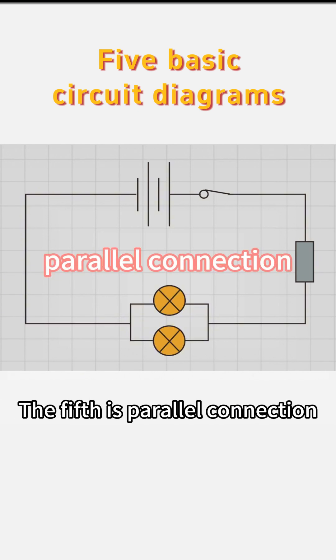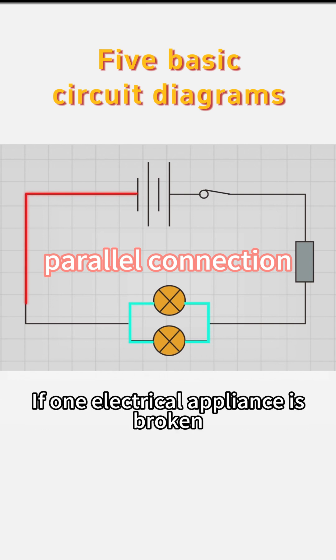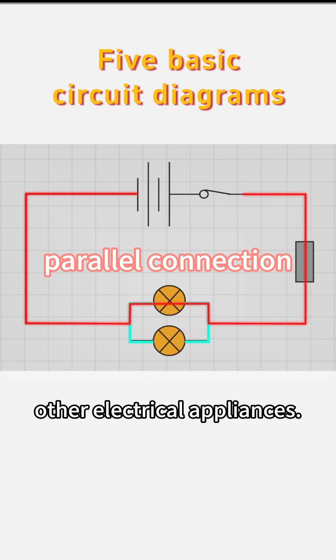The fifth is parallel connection, which means that multiple components are connected hand-to-hand and tail-to-tail on a power supply. If one electrical appliance is broken, it will basically not affect other electrical appliances.